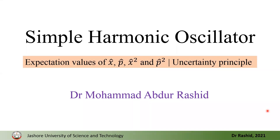Assalamu alaikum. In the last few videos we were talking about the quantum harmonic oscillator. We showed how to construct the Hamiltonian and calculated the energy eigenstates and eigenvalues. We also showed that the energy eigenstates are orthonormal. Today we shall calculate the expectation value of the position operator, momentum operator, x-squared, and p-squared. Finally, we will show that the quantum harmonic oscillator satisfies the uncertainty principle.